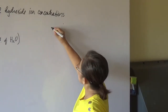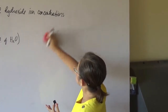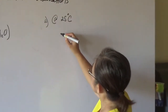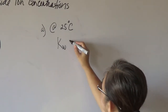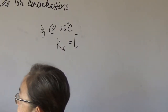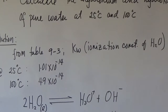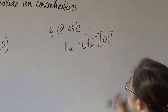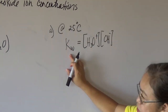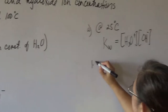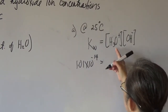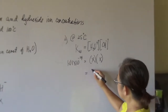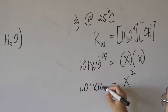So we write the equilibrium expression. For water at 25 degrees Celsius, KW is equal to the concentration of the hydronium ion times the concentration of the hydroxyl ion. Since KW at 25 degrees Celsius is 1.01 times 10 to the negative 14, and both concentrations are X, we have X squared equal to 1.01 times 10 to the negative 14.